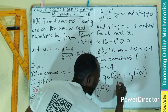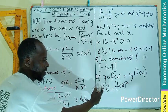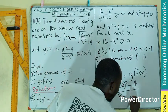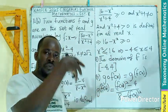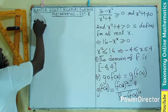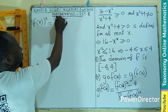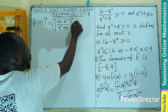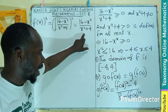Whatever is at the input gets squared. So f(x) squared, minus 4, divided by 8 minus f(x) squared. Now we need to compute f(x) squared. That is the square of the square root of (16 minus x²)/(x²+4), which simply equals (16 minus x²) divided by (x² plus 4).